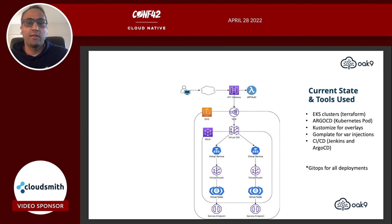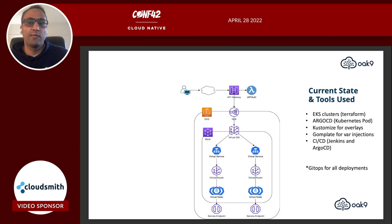This is the current state of our architecture. We have replaced Fargate with an EKS cluster, and then we use Argo CD. The tooling around Argo CD is Kustomize for the overlays and Gomplate for the variable injections. We also leveraged CI/CD tools such as Jenkins and Argo CD. The majority of this follows GitOps principles for deployment.